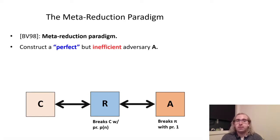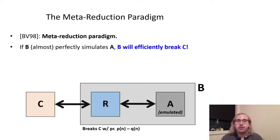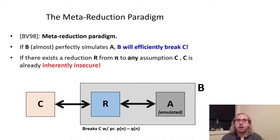Of course, since R uses the inefficient adversary A, it definitely doesn't break C in polynomial time, so we're not quite done. If we instead create what's known as a meta-reduction B, which efficiently simulates the interaction between R and A with probability close to 1, say 1 minus Q, then B must break C with probability P, since its messages to C are, except with probability Q, identically distributed to those from the real reduction R, which breaks C with probability P. What this means is, if there exists any reduction R such that P is large enough to be non-negligible, the meta-reduction B breaks C, showing that C being secure implies that no such R can exist.